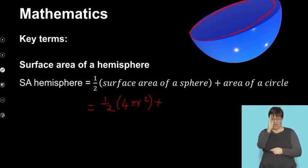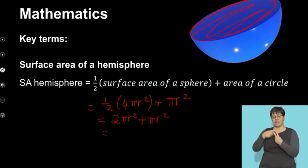So the surface area of a sphere is 4πr². And then I also am adding the area of this top circle, and I know that the area of a circle is πr². So half times 4πr² gives me 2πr², and I'm adding this to πr². So I can simplify and say that the surface area of a hemisphere is equal to 3πr².